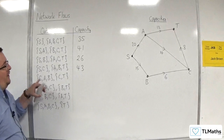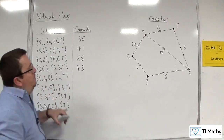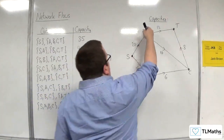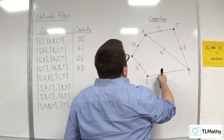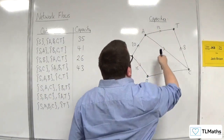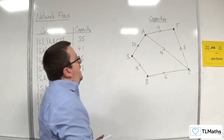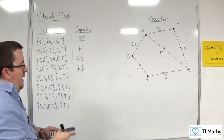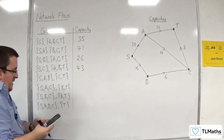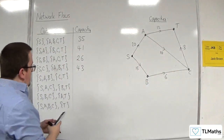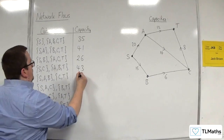Then we've got S, A, B — those three. So we've got 12, 14, and 6. So 12 plus 14 plus 6 is 32.